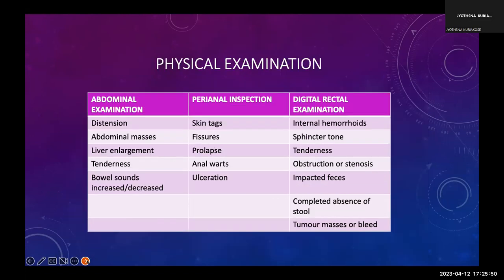Physical examination includes assessing abdominal distension, any masses, tenderness, and bowel sounds. A detailed perianal and rectal examination is especially important when there is spinal cord injury — assessing sphincter tone, voluntary contraction — all of which will help identify the cause of constipation and guide management. Investigations are not routinely necessary in a palliative care setting, but hypercalcemia is one condition that can present as constipation.